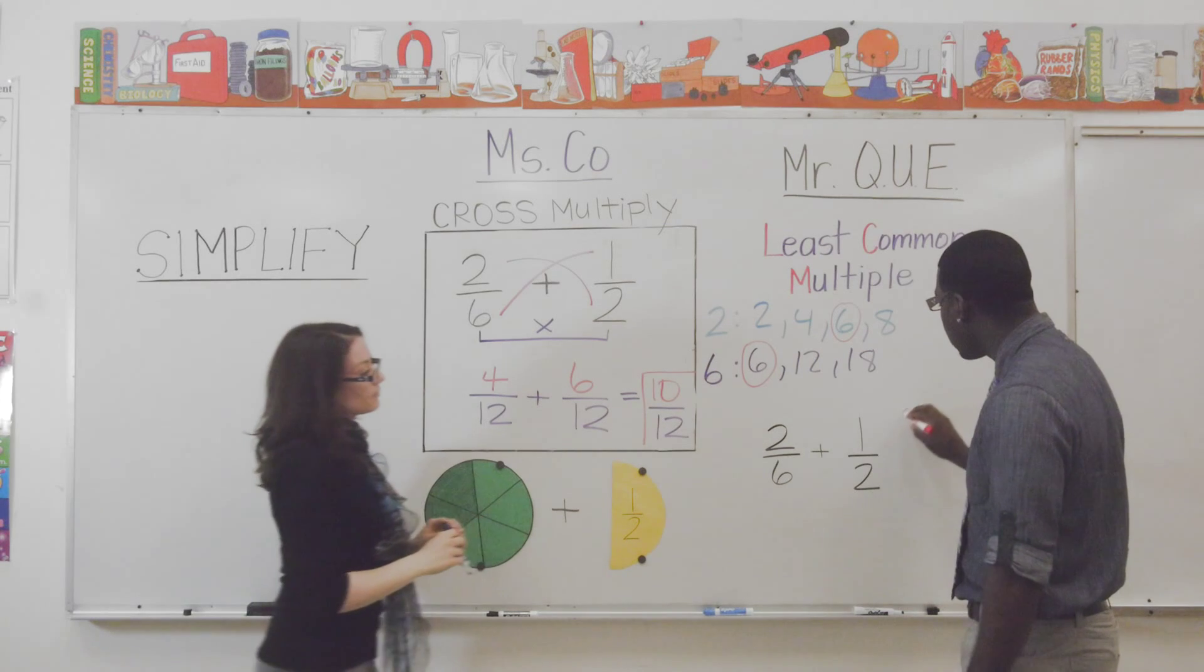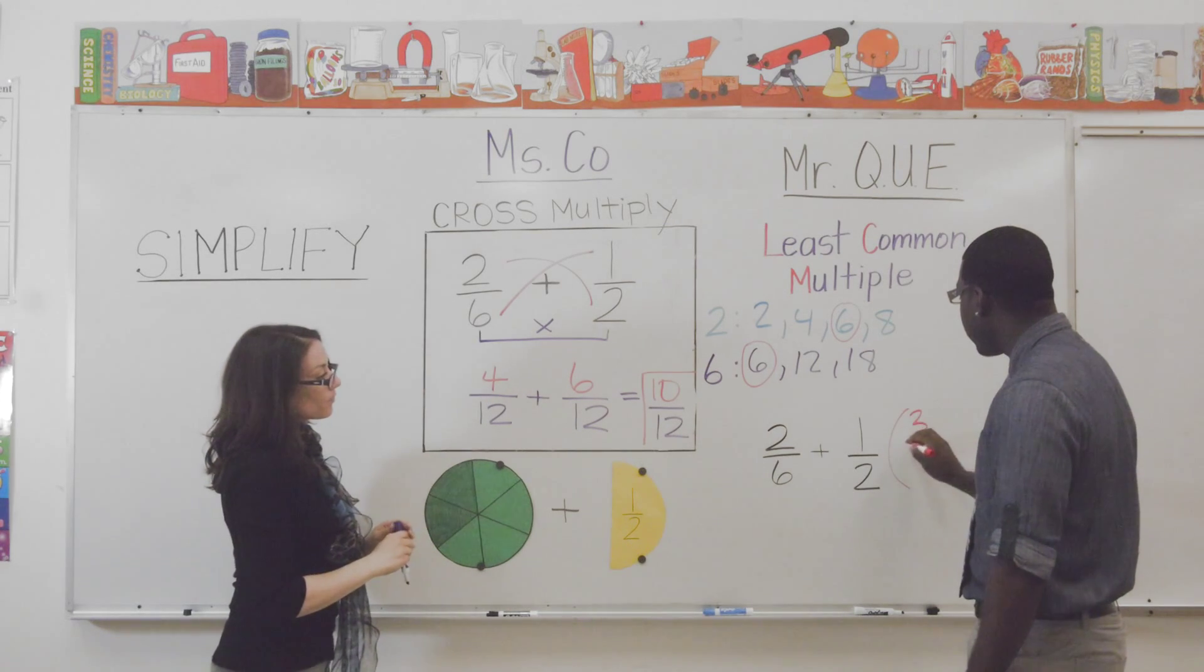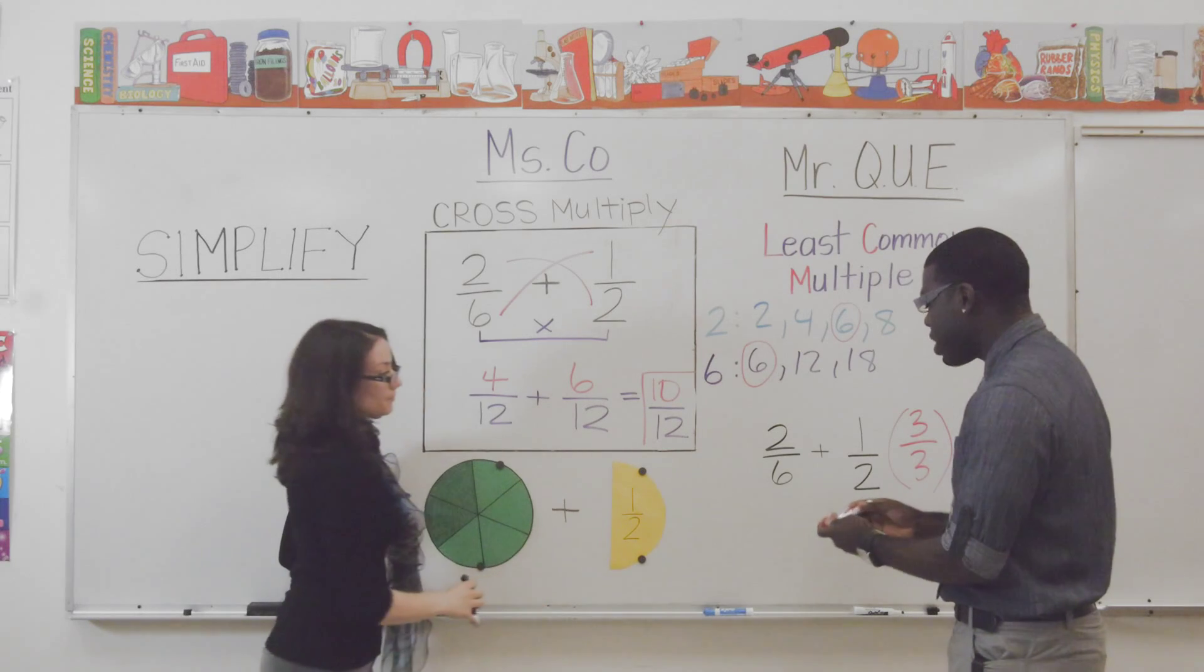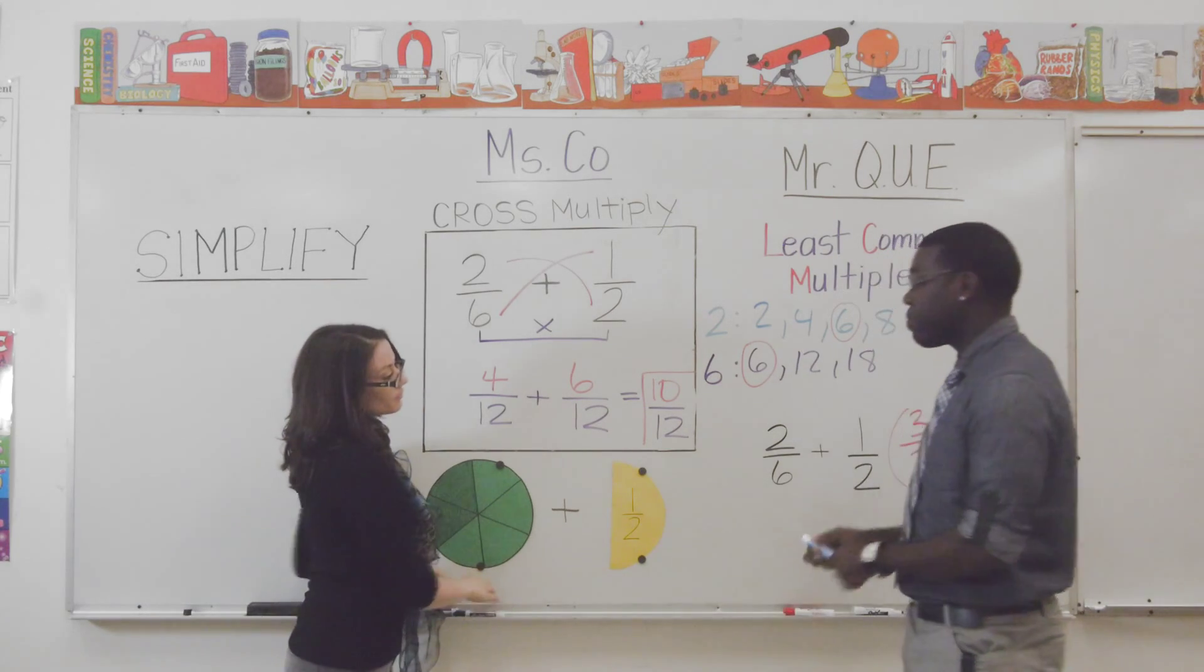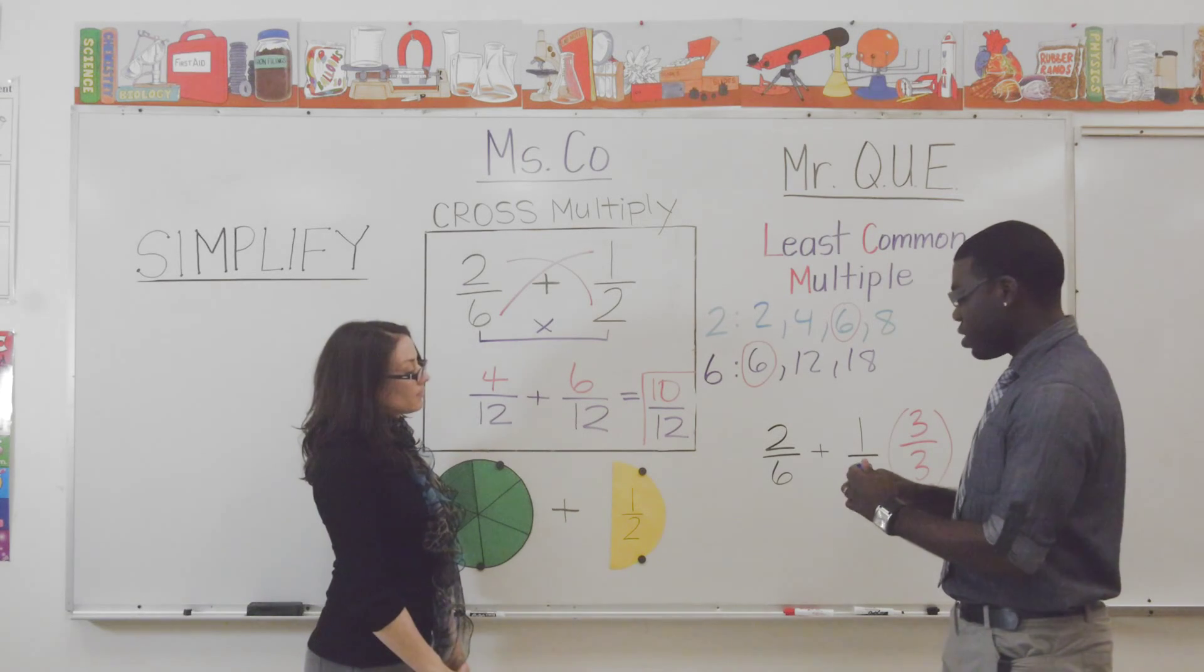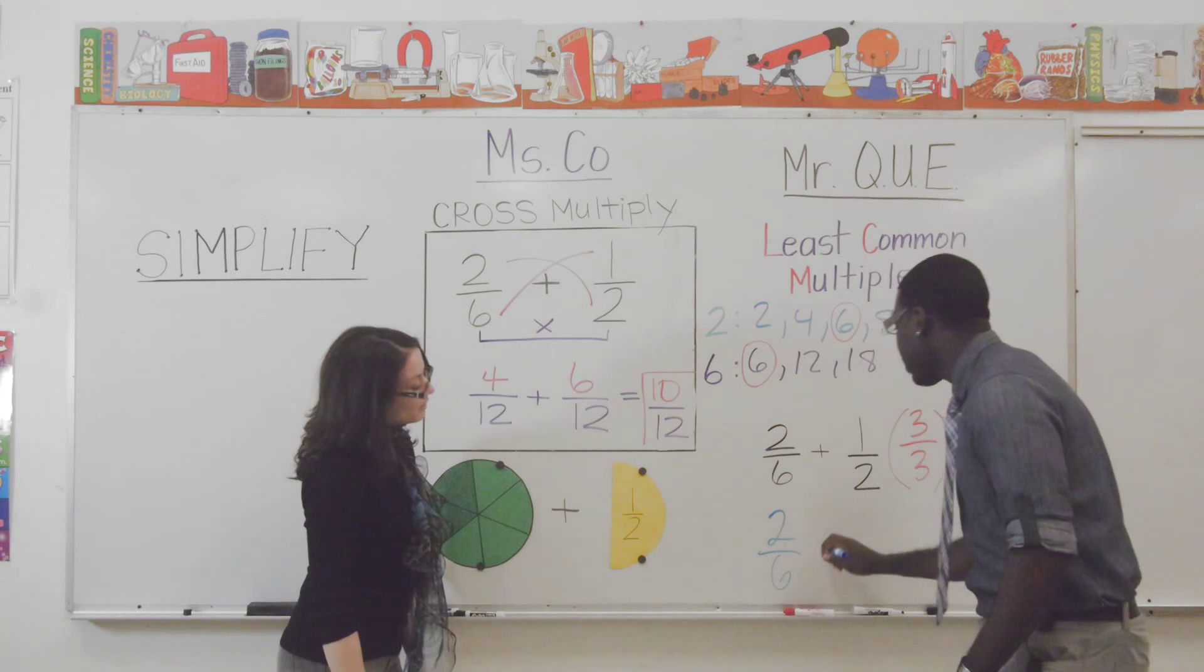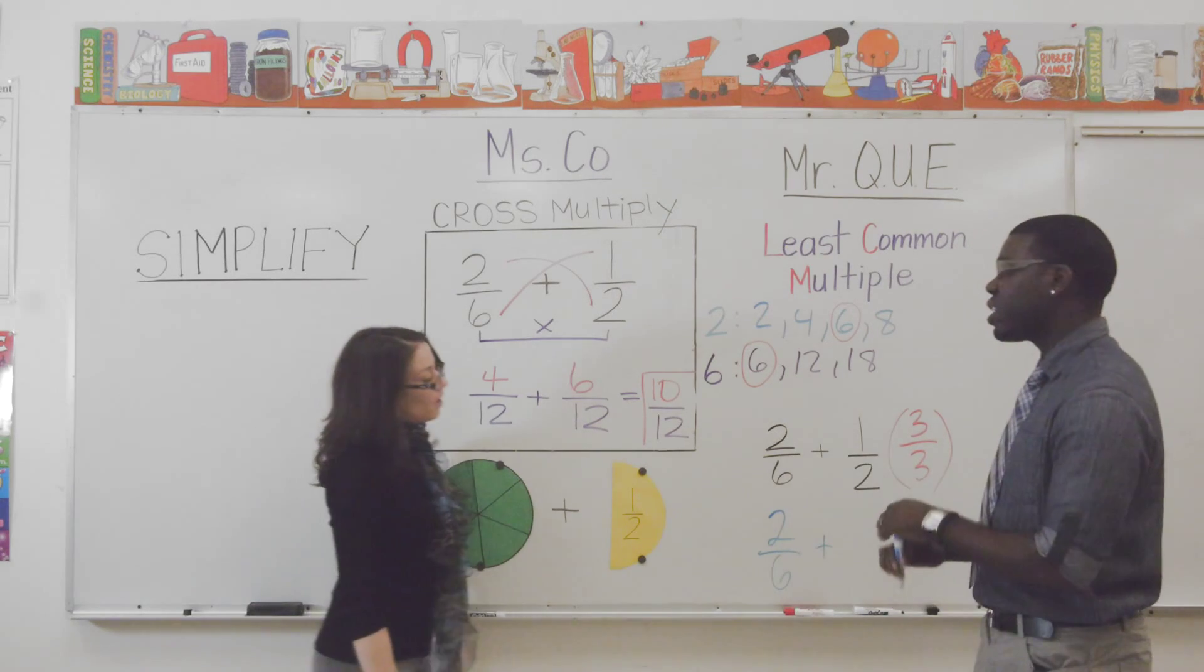So, that tells me to multiply one-half times three over three. Okay. This is going to help me get the least common multiple. So, now, let's rewrite this fraction. First one is going to stay the same. Okay, two-sixths. Two-sixths. And now, can you tell us what this fraction is going to change into?